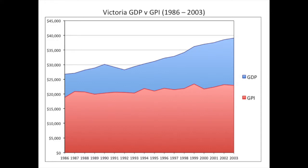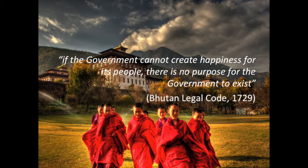The genuine progress indicator can also be applied at a regional level. An analysis of Victoria between 1986 and 2003 showed that growth in the genuine progress indicator of 22% — being 1.5% per annum — was significantly less than the gross domestic product increase of 45% — being 2.5% per annum — over the same period.